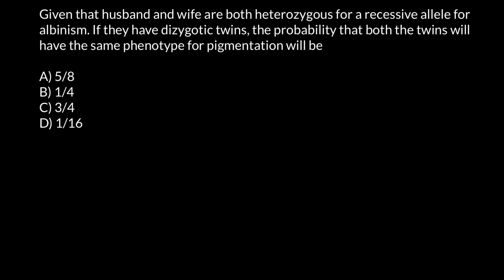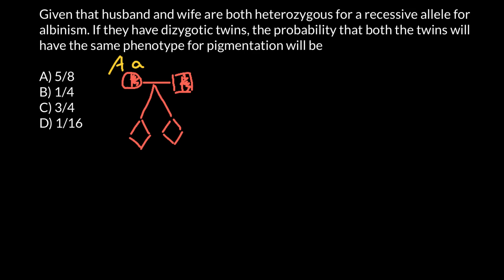So basically, our pedigree would look as follows. Here is the wife, here is the husband, and we expect that they would have dizygotic twins — sex is not specified, so we use the diamond sign when sex is not important for our calculations. We know that both wife and husband are heterozygous for this genetic disorder. The dominant allele is the normal allele, and the recessive allele is the abnormal allele, which when present in two copies causes this genetic disorder. Both husband and wife are heterozygous — their phenotype is normal, but they are carriers.